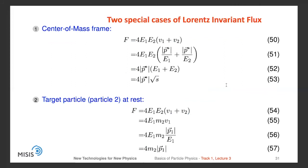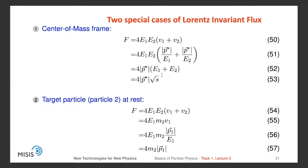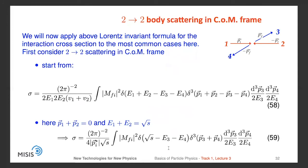We can compute two special cases of the Lorentz-invariant flux. The first case is the center-of-mass frame, where two particles collide at the center of mass as in a typical particle collider like the LHC. The second case is where the target particle (particle 2) is at rest, corresponding to fixed-target experiments. In the first case, the flux factor F equals 4p*√s, and in the second case it equals 4M₂ times the momentum of the incident particle.